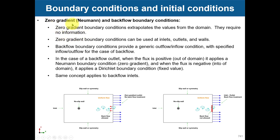Regarding zero gradient or Neumann boundary conditions: zero gradient is just extrapolation. At the outlet, when the flow is going out, you just take the value of the cell next to the boundary — that is all. They require no information. You might be tempted to put zero gradient all around, but be careful: at least you need to have one Dirichlet value. If you put everything zero gradient, your system is not consistent.